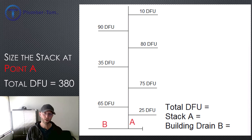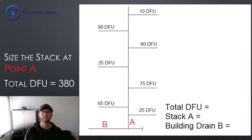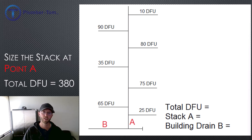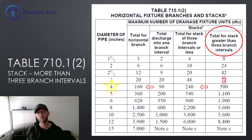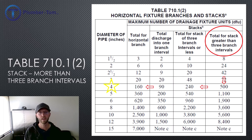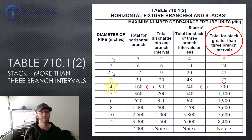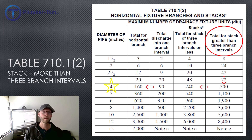Going back to the earlier large building diagram, let's look at the stack at point A. The total drainage fixture units for all branch intervals at the base of the stack is 380 DFU. Using the column for stacks greater than three branch intervals: 380 is more than 42, more than 72, but less than 500 — so we stay on that line and find four-inch pipe for the base of the stack. Remember, once it becomes the building drain at the bottom, we had to go to a five-inch — or practically a six-inch — pipe.